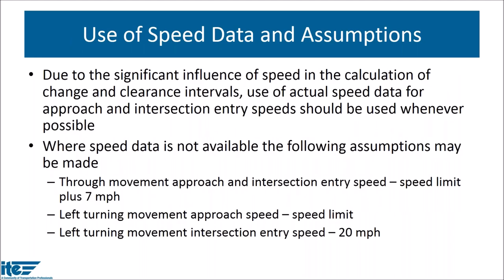There is a significant influence in the formulation on the assumptions made about speed — both approach speed and intersection entry speed. We've recommended that actual speeds be used wherever possible; wherever you have speed data, it's best to use real data instead of assumptions. However, recognizing that you won't have actual speed data in all cases, there are assumptions listed in the recommended practice that can be made for through movement approach and intersection entry speed, as well as left turning movement approach and intersection entry speed.